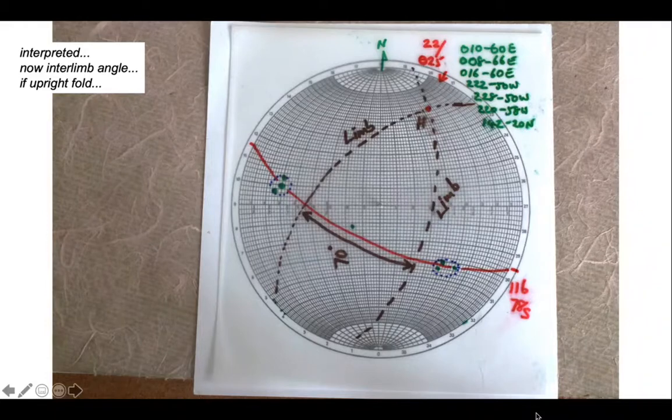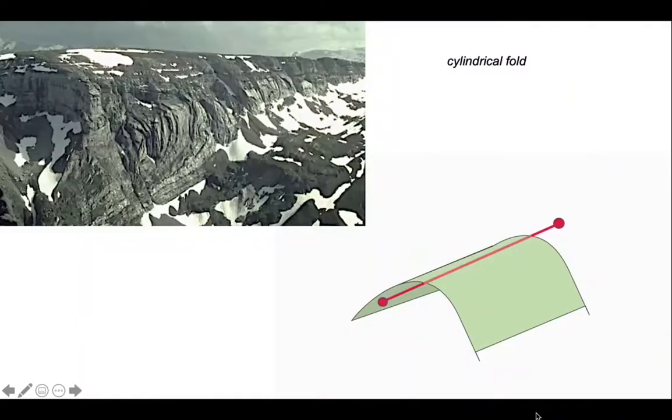Poles are a great way of dealing with an array of data from a fold structure. But we can do something more than that. The approach we've used so far has assumed that there's a single orientation of a hinge line, in other words that the fold is cylindrical.